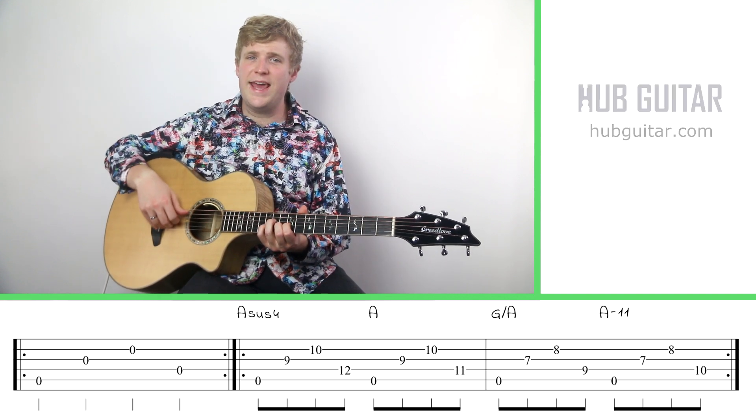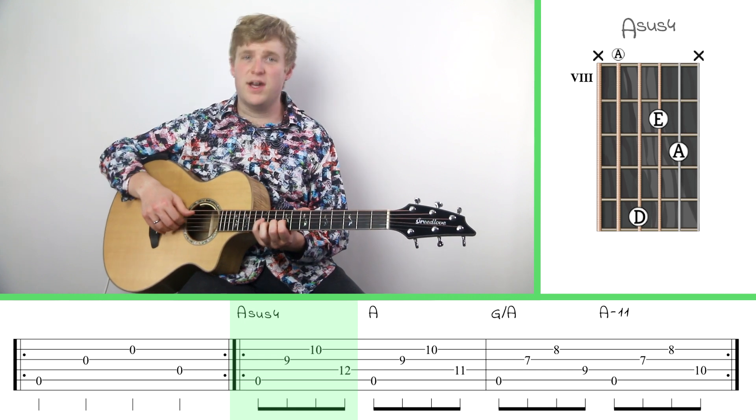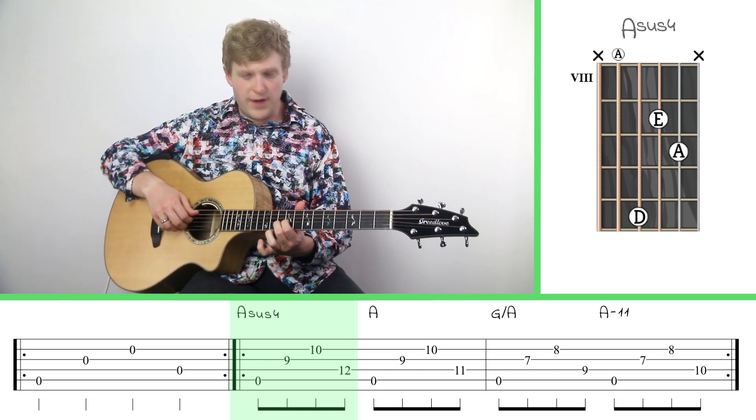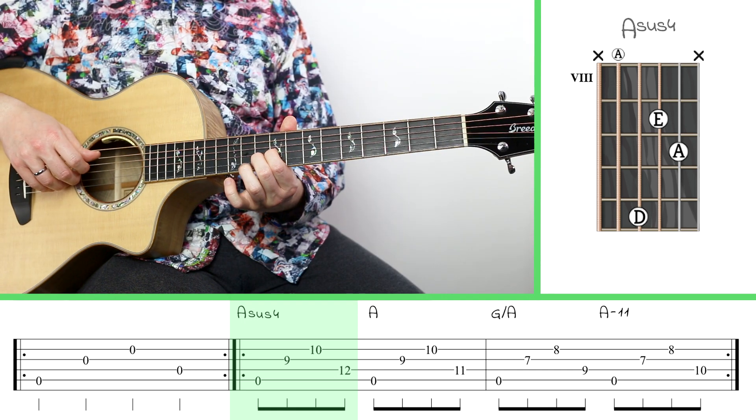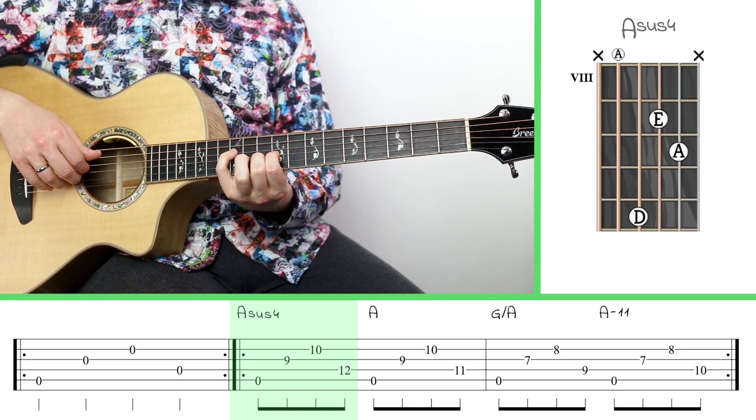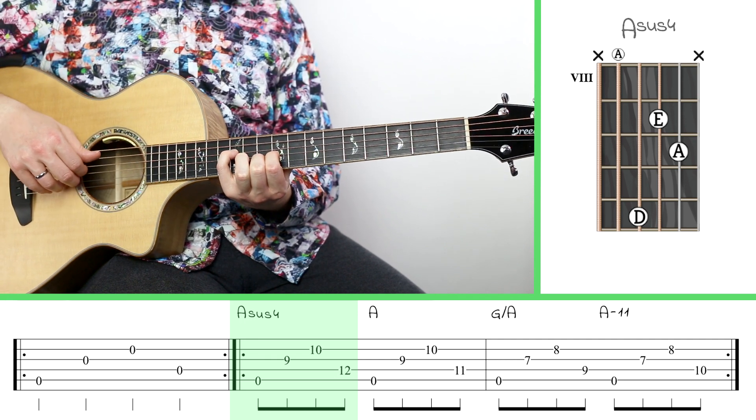We're going to start with an A sus 4 chord all the way up here at frets 9, 10, and 12. I've got my index finger on the 9th fret of the 3rd string, my middle finger on the 10th fret of the 2nd string, and pinky finger on the 12th fret of the 4th string.